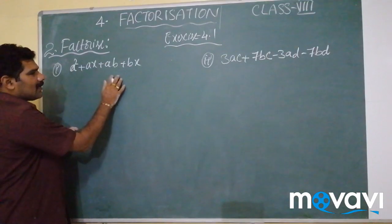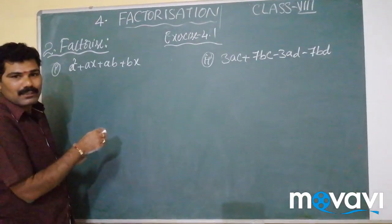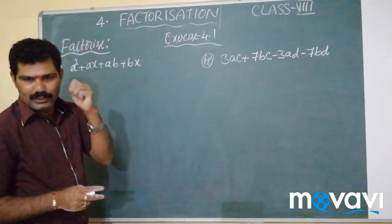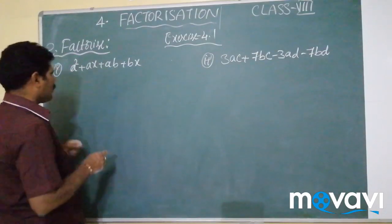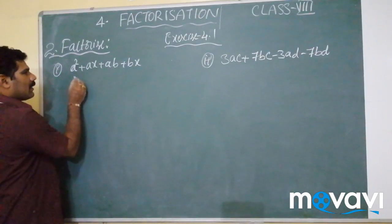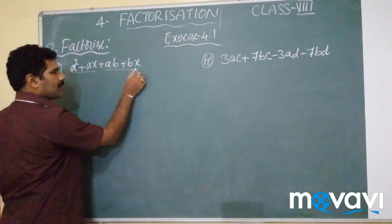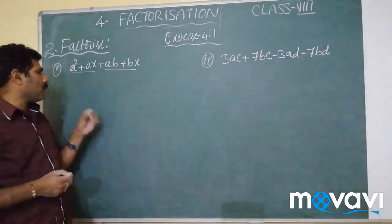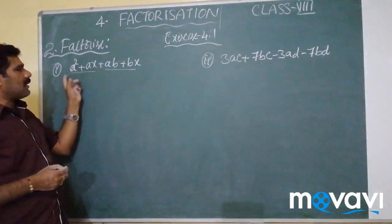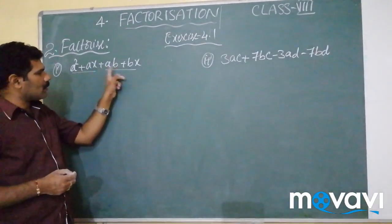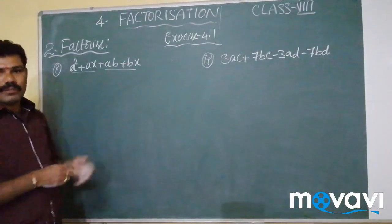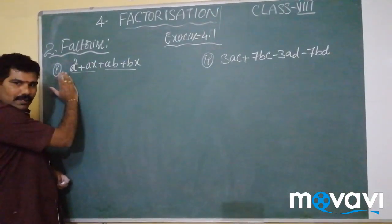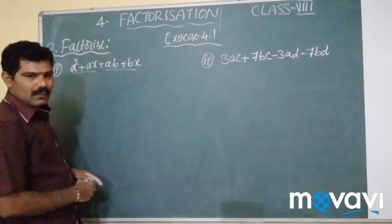These problems can be done in different ways. This first problem itself can be done in two ways. If I take these two terms separate and these two terms separate, we need to see how to select — that is very important. These two terms contain A and these two terms contain B. For that reason I am separating terms having A as common factor and terms having B as common factor.